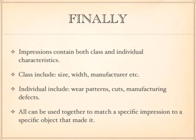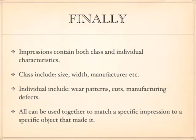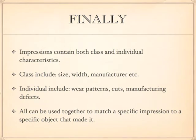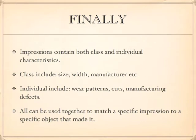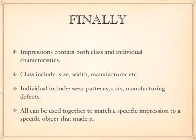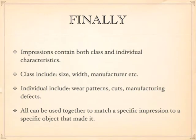Impressions contain both class and individual characteristics. Class characteristics include size, width, and manufacturer — things that are common to all the tires or shoes made by that specific manufacturer. Individual characteristics include wear patterns, cuts, and manufacturing defects. All of these can be used together to match a specific impression to a specific object that made it.